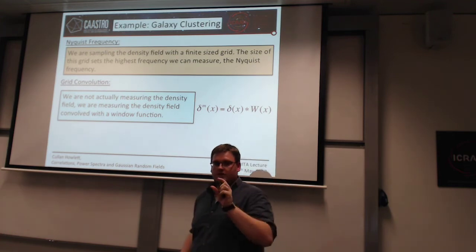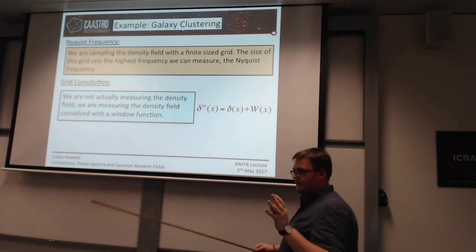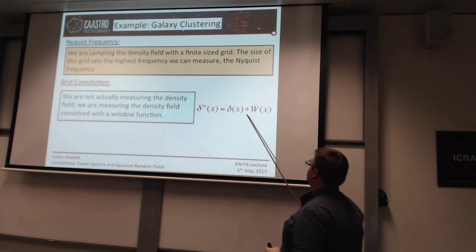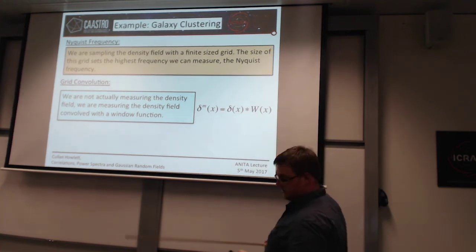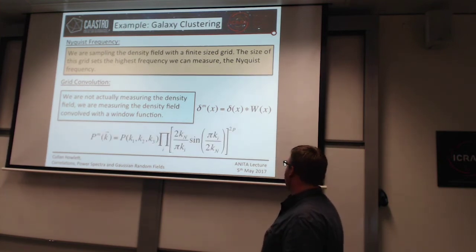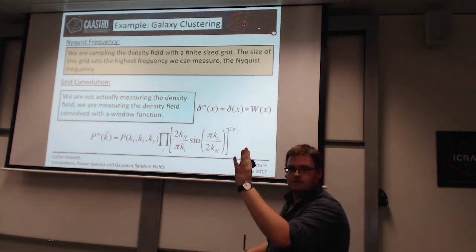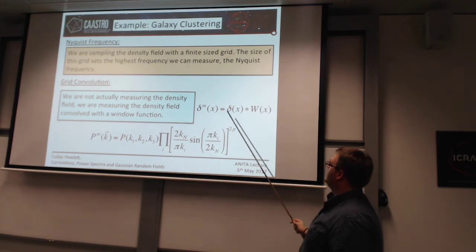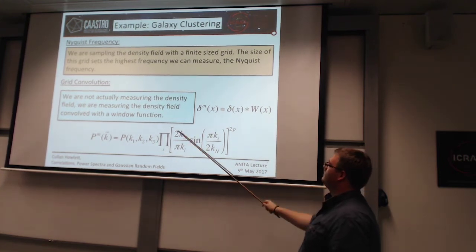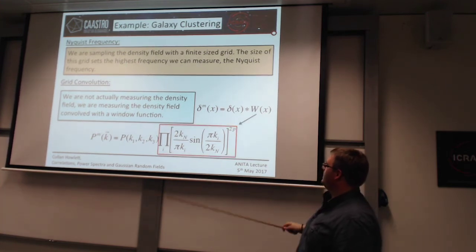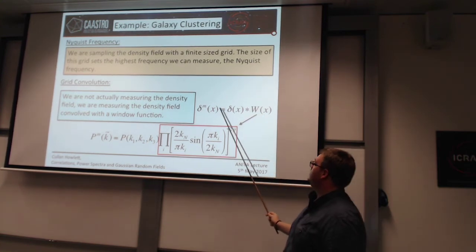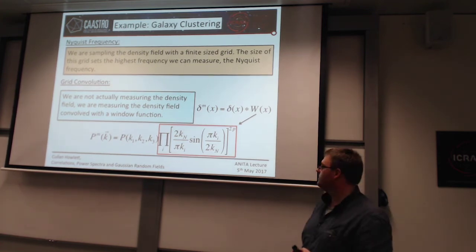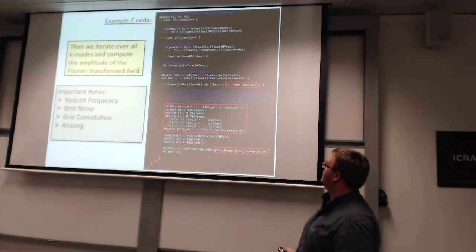Because you've got a grid, you also have a convolution with the grid cells. In effect, I've taken my data, gridded it, and so what I've done is convolved my smooth distribution of data with a grid of some size. My gridded data is my true data convolved with some grid. When you Fourier transform that, you end up with a measured power spectrum that is not the true power spectrum, but the true power spectrum multiplied by some function W(k). Since a convolution in real space becomes a multiplication in Fourier space, you can divide through by this factor to recover the true power spectrum.